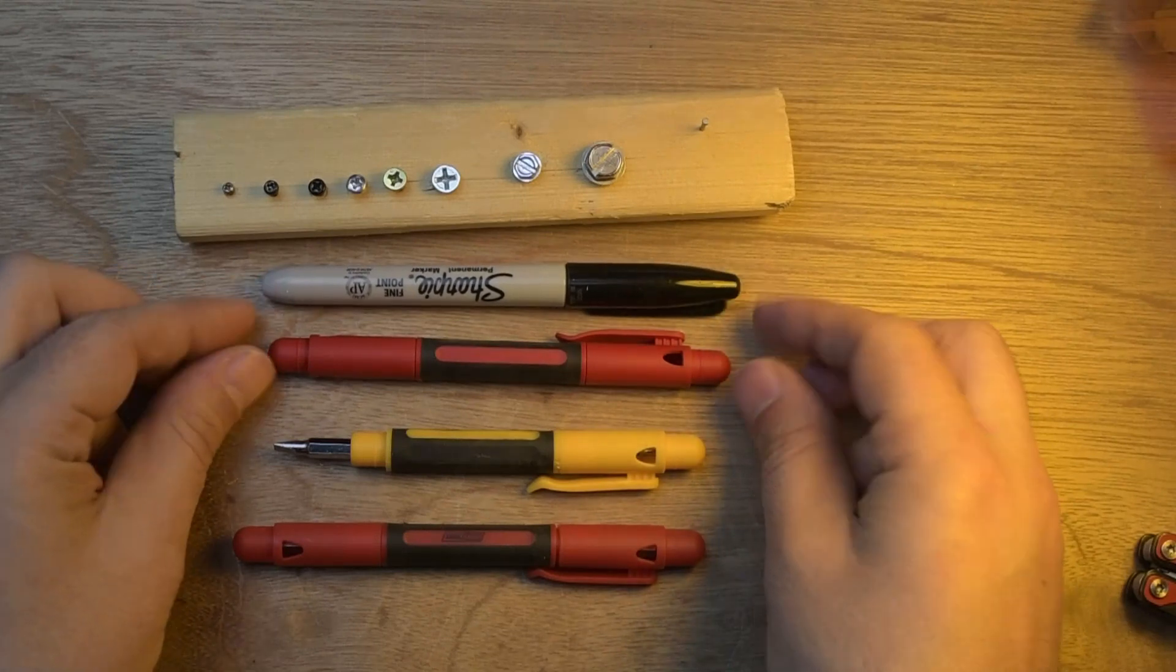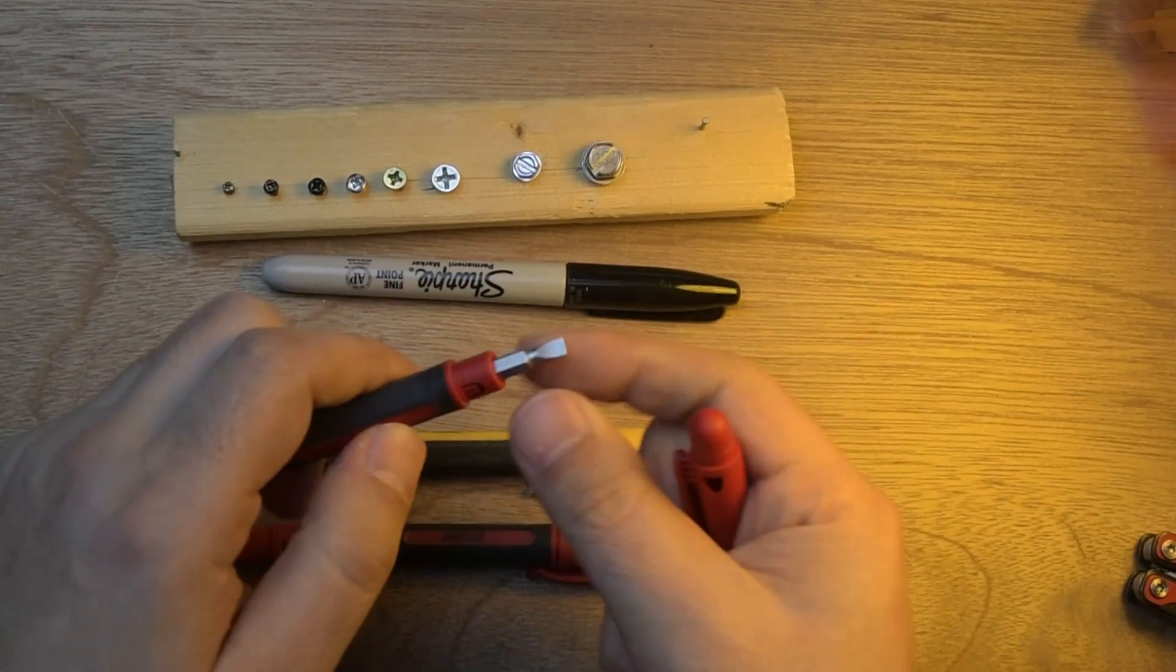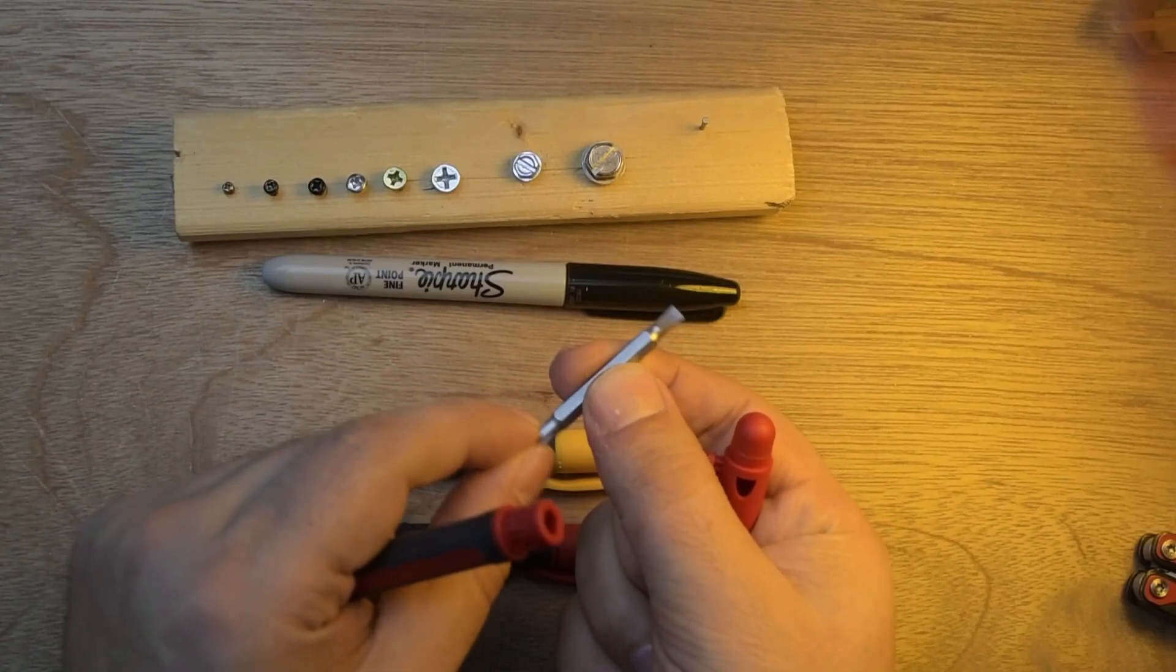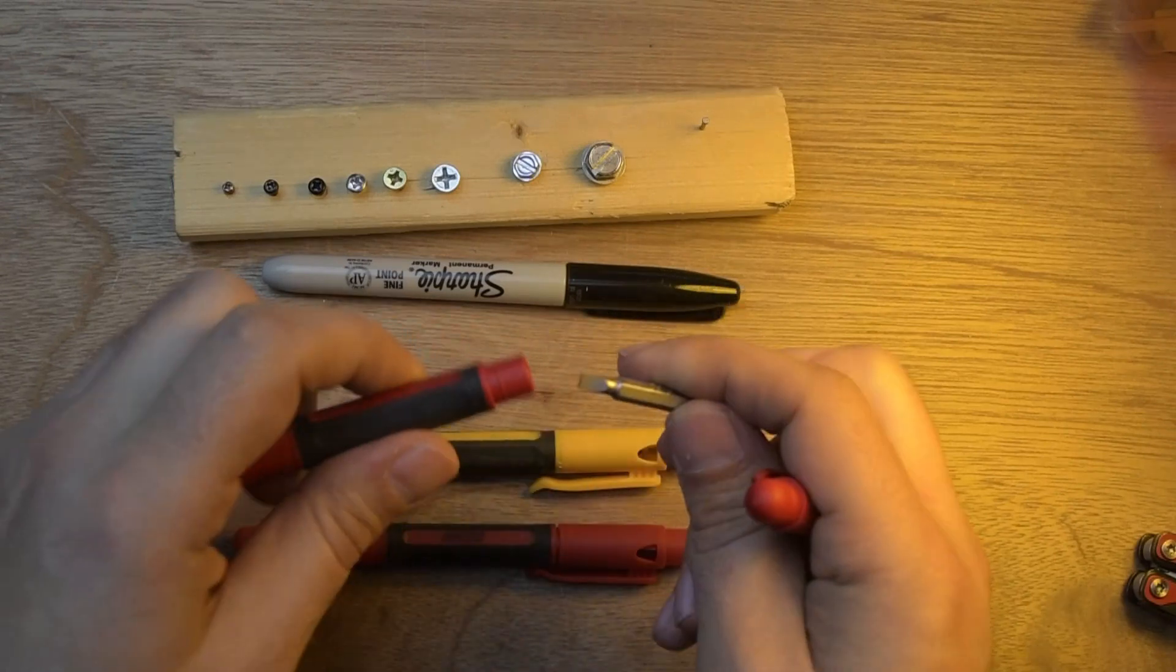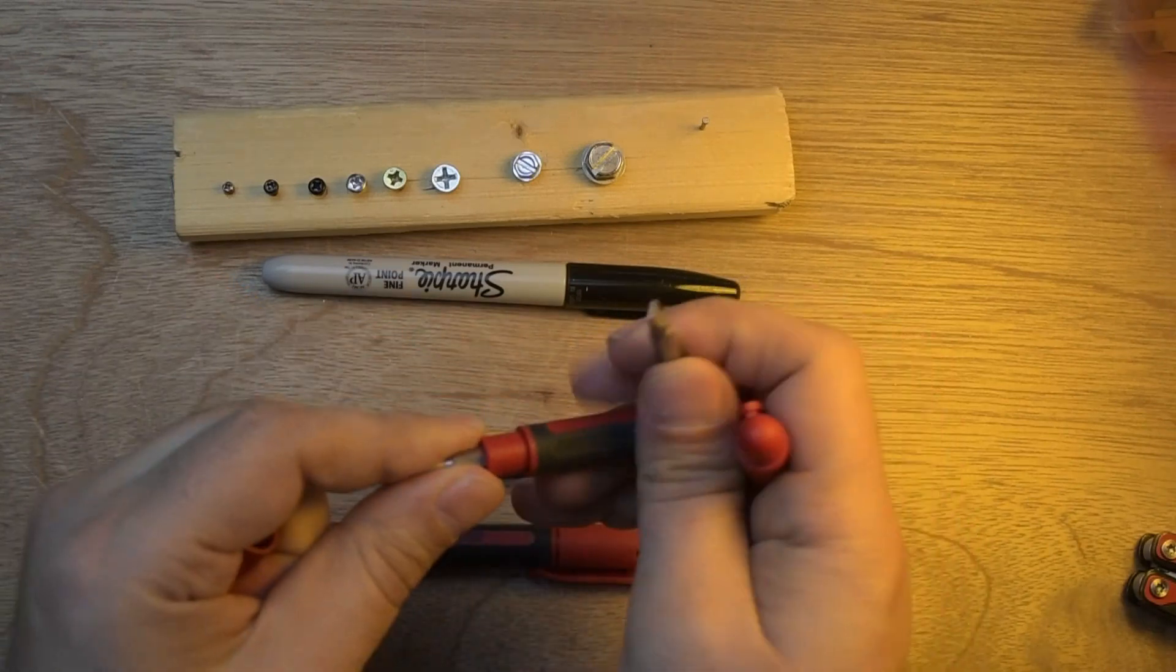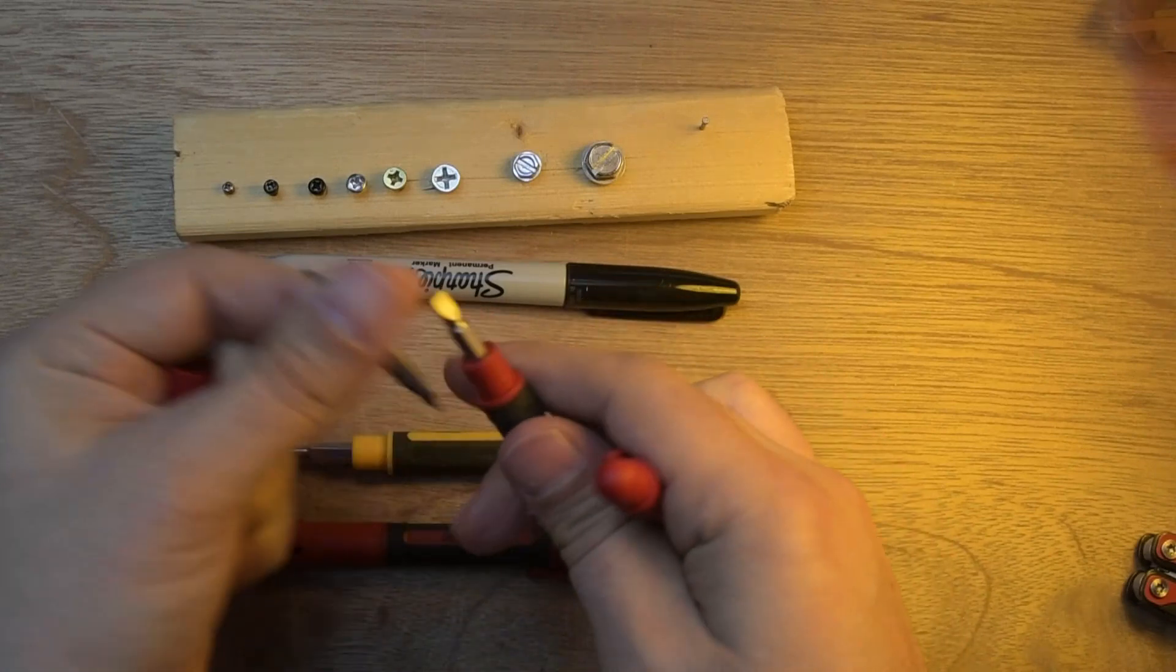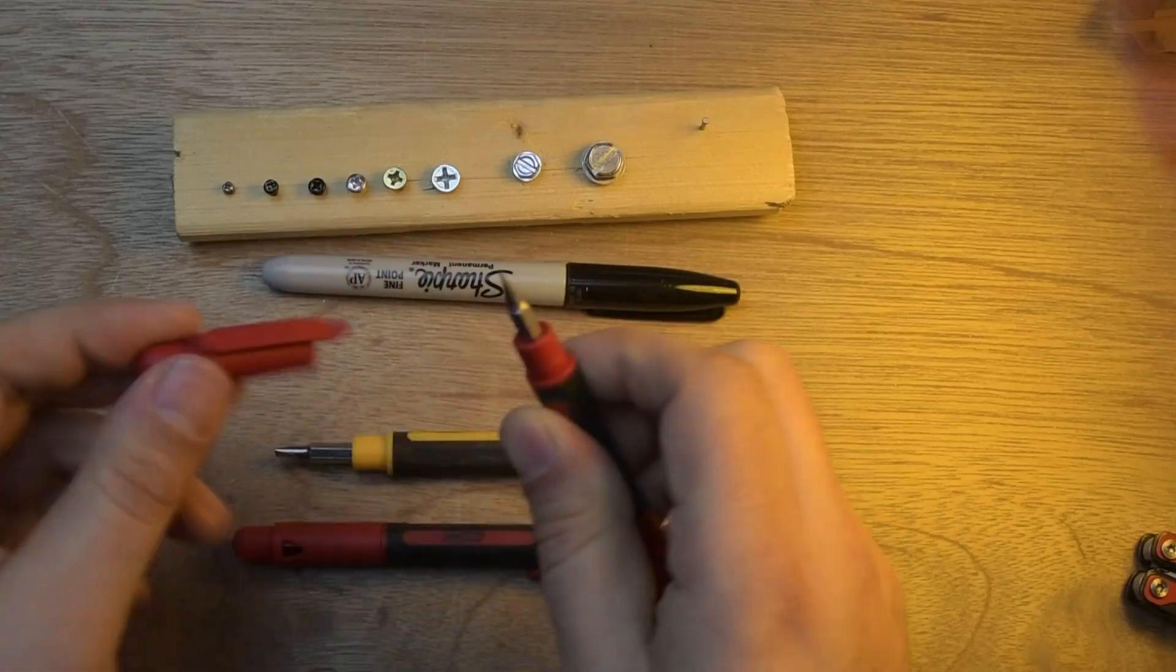They are very small, the size of a pen, and they have four bits: two large and two small flathead and Phillips. That's what I call four-in-one because you can assemble them and get access to these four bits.